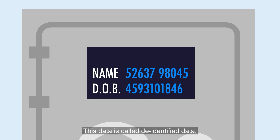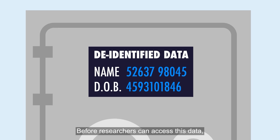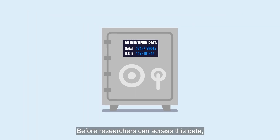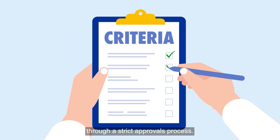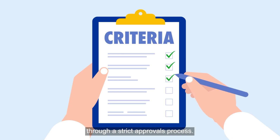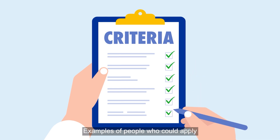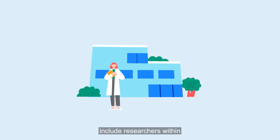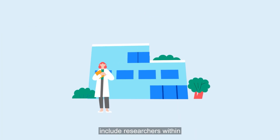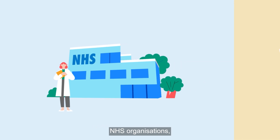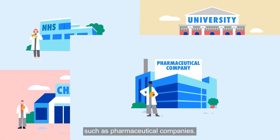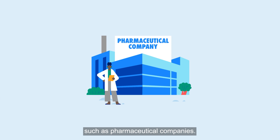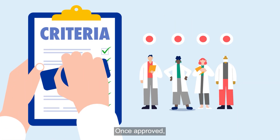This data is called de-identified data. Before researchers can access this data, they must show they meet a set of specific criteria through a strict approvals process. Examples of people who could apply for this approval include researchers within NHS organisations, universities, charities, and private companies such as pharmaceutical companies.